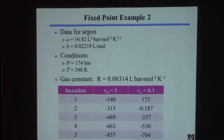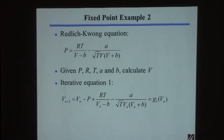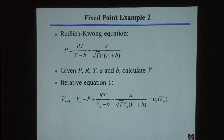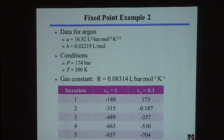Here's argon with its constants. These are the conditions: pressure, temperature, and the appropriate gas constant for these units. I have no idea what the molar volume should be — I know it's positive, but I don't know if it's 0.1, 1, 10, or 100. I tried a couple of guesses with this iterative equation. It diverged — one guess immediately went negative and kept going, another went way positive. It did not converge.